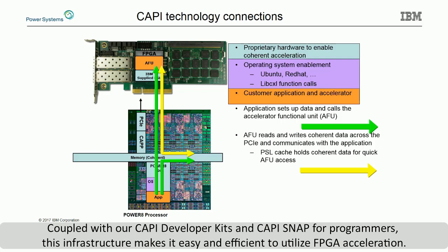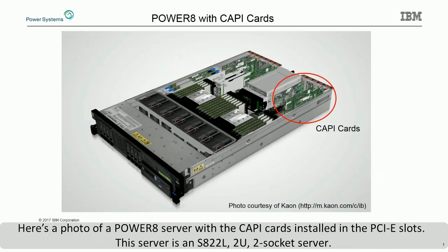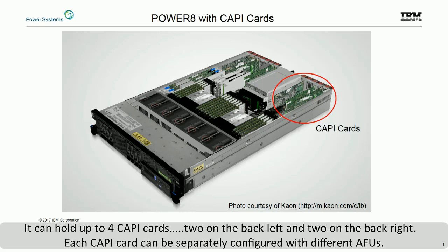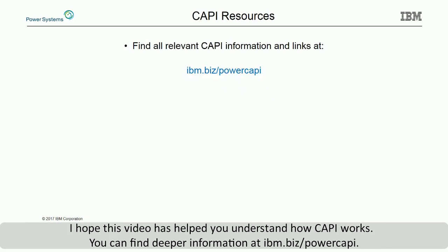Here's a photo of a Power8 server with CAPI cards installed in the PCIe slots. This server is an S822L 2U two-socket server. It can hold up to four CAPI cards — two on the back left and two on the back right. Each CAPI card can be separately configured with different AFUs. Coupled with our CAPI developer kits and CAPI SNAP for programmers, this infrastructure makes it easy and efficient to utilize FPGA acceleration. You can find deeper information at ibm.biz/PowerCAPI, including links to developer kits, information on CAPI SNAP, and a list of CAPI accelerators and solutions.